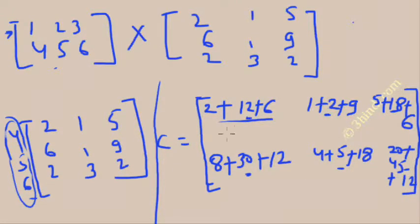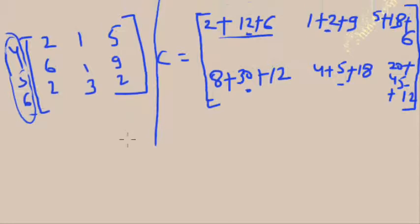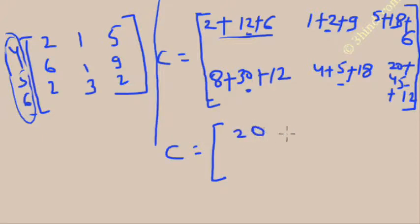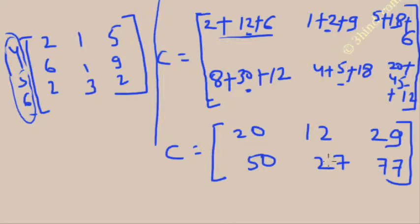So this is the output matrix. If you add all the sums, you will find: 2 + 12 + 6 = 20; 1 + 2 + 9 = 12; 5 + 18 + 6 = 29; 8 + 30 + 12 = 50; 4 + 5 + 18 = 27; 20 + 45 + 12 = 77. So C equals the matrix: first row is 20, 12, 29 and the second row is 50, 27, 77.